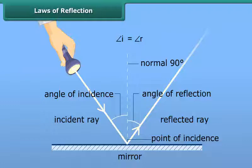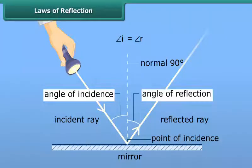According to this law, angle of incidence is always equal to the angle of reflection. That is, angle i is equal to angle r.